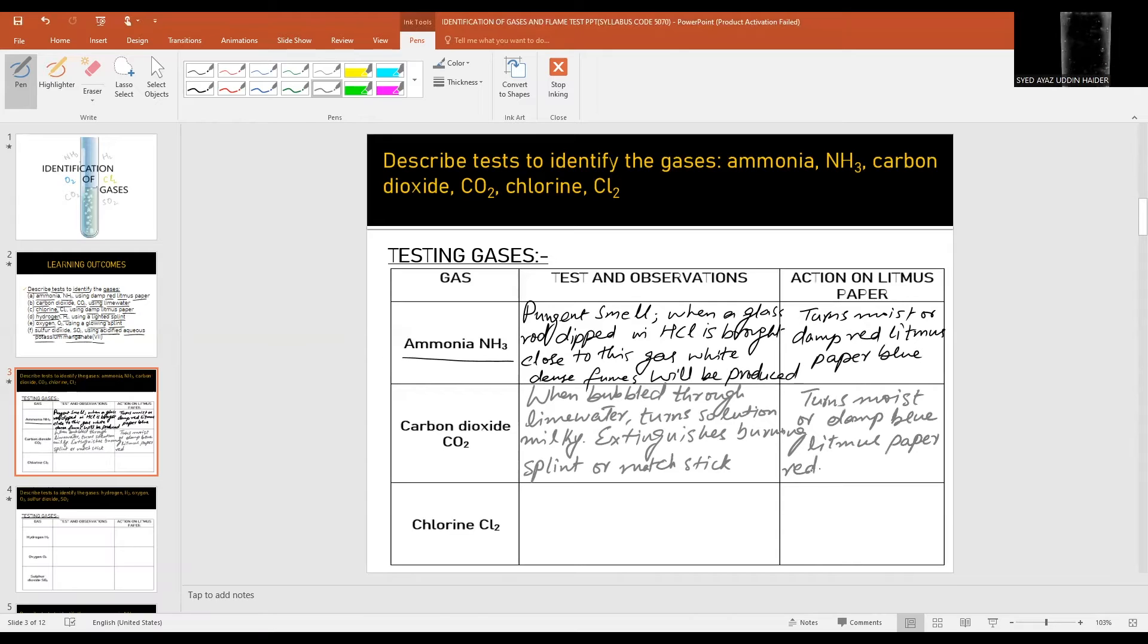Chlorine: it's a yellowish green or pale green gas. The gas is also acidic in nature which initially turns blue litmus paper red then bleaches damp blue litmus paper.